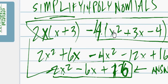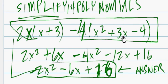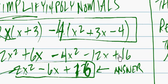Minus 4x squared minus 12x, and negative 4 times negative 4 is 16.